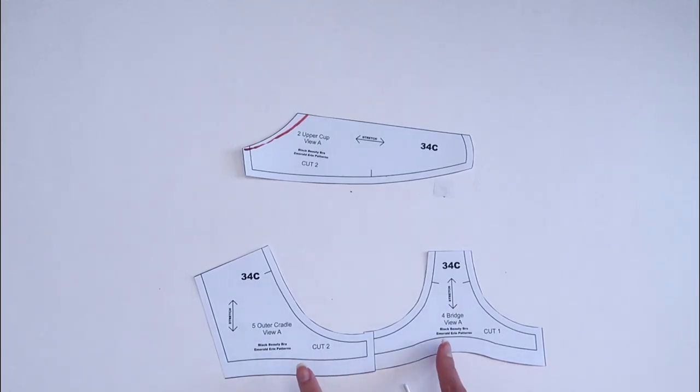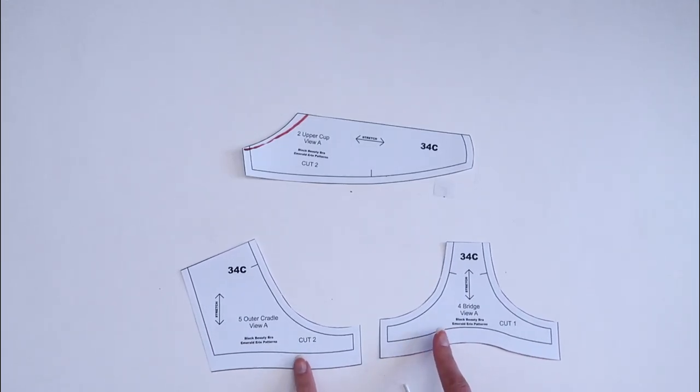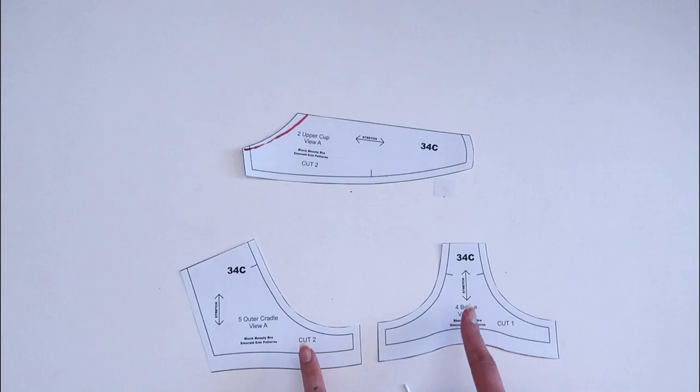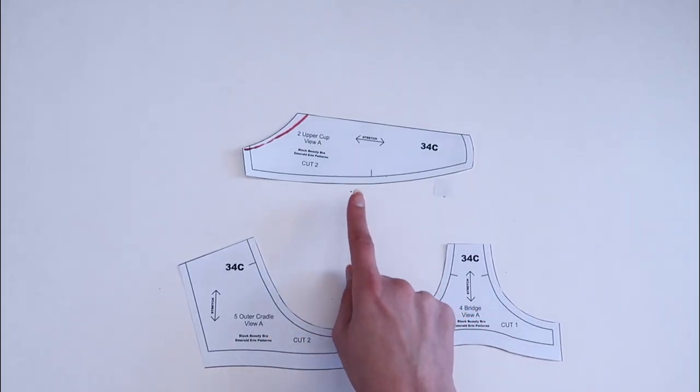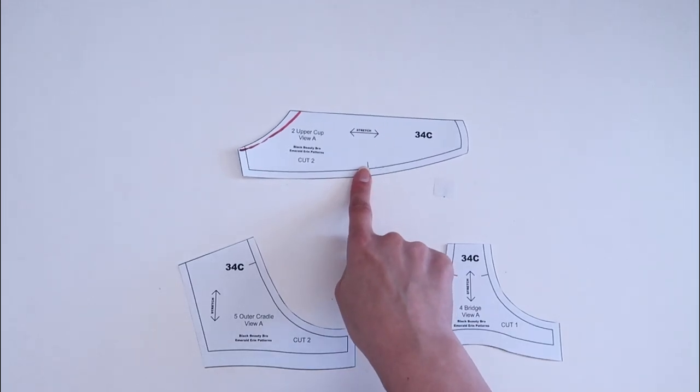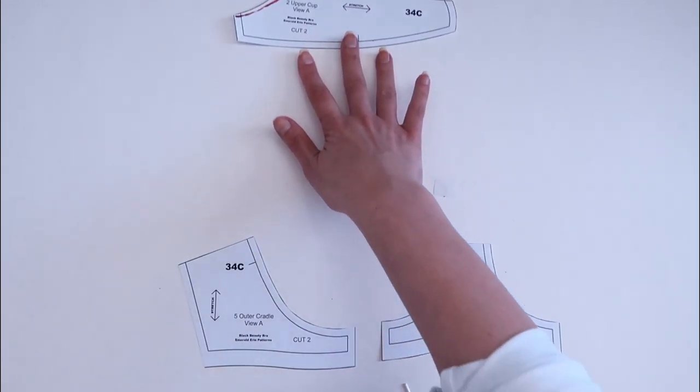In order to do this the main alterations are going to be made to your cradle piece which is your bridge and your outer frame. We're also going to be making changes to our upper cut piece as well but this is for a little bit later.